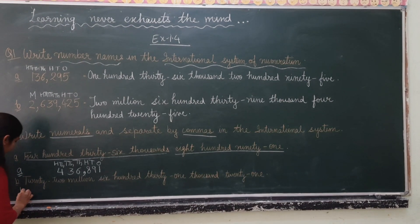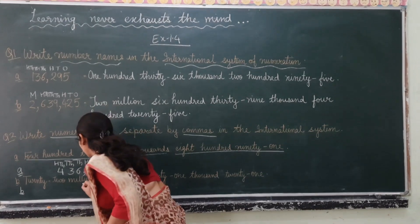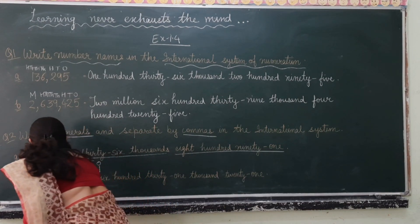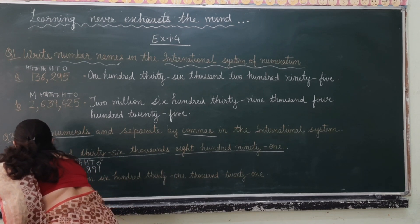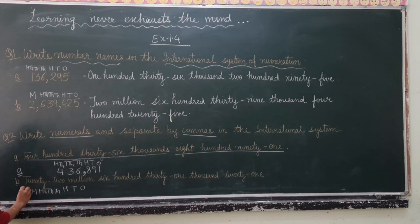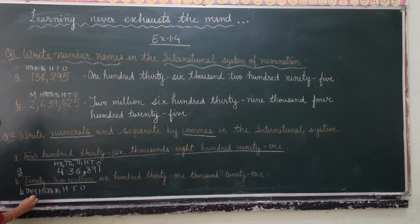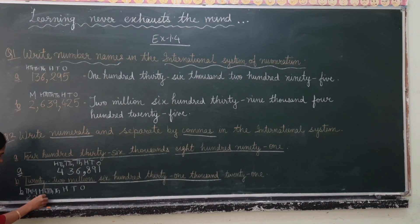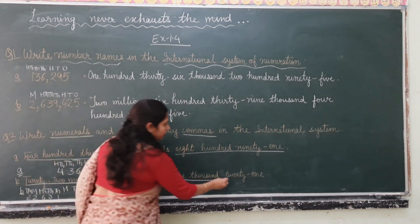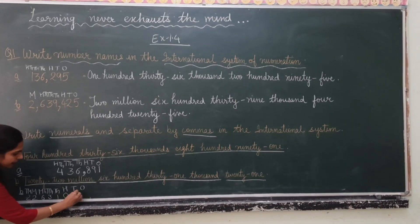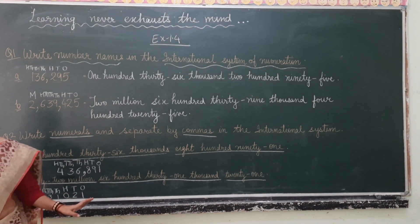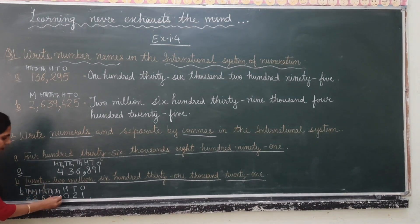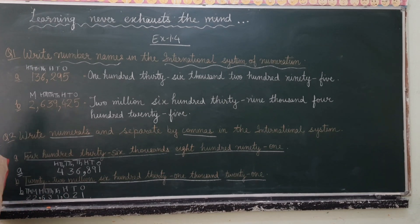Now let's move to part D. We write the places: ones, tens, hundreds, thousands, ten thousands, hundred thousands, millions, and ten millions. The number is twenty-two million, six hundred thirty-one thousand, six hundred twenty-one. We write zero in the hundreds-of-thousands place, giving us 22,631,621. We then put commas before every three digits to get the final answer.